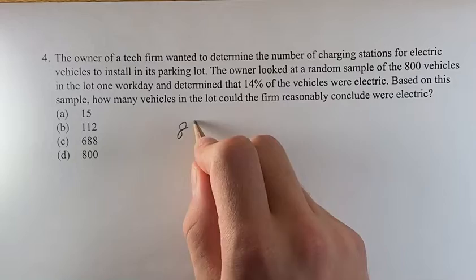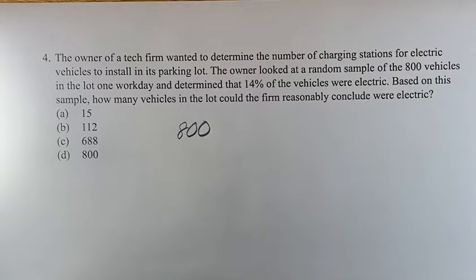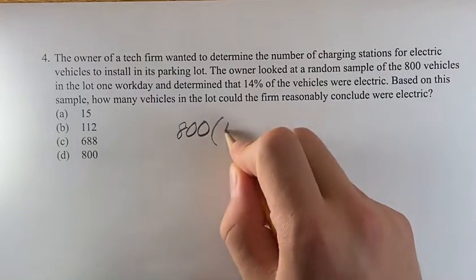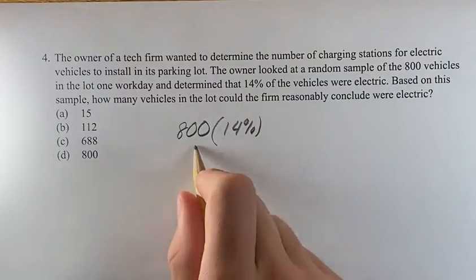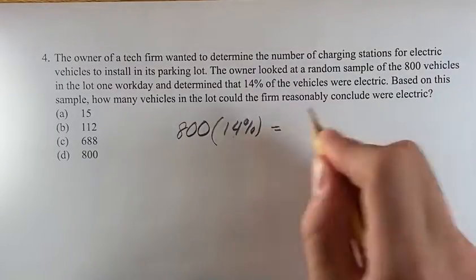So what you're going to do for this is you're going to take the total number of vehicles in the lot that day, and you're just going to multiply it by 14%. Now, you could just multiply these two in a calculator, but if you don't have that option,